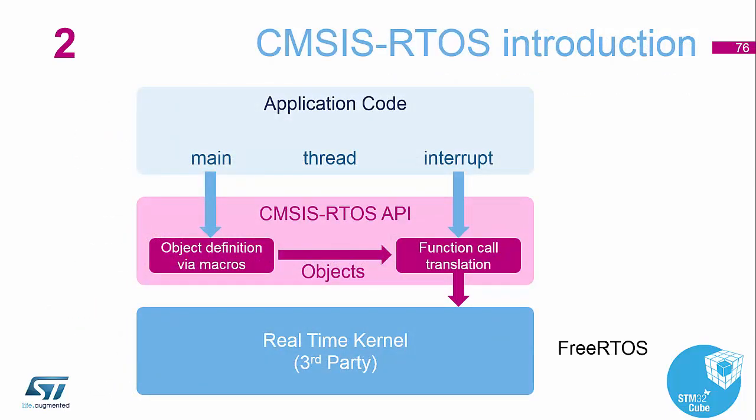FreeRTOS is bundled inside CubeMX — usually the latest version ported to the STM32. Every time we update the CubeMX libraries, if there's a newer version of FreeRTOS we'll add it at that point. Normally your application code will sit at the top and your main code will go through into the RTOS. Interrupts are managed slightly differently via the RTOS API commands, so you don't lose the benefits of an interrupt-based system just because you're using the RTOS.